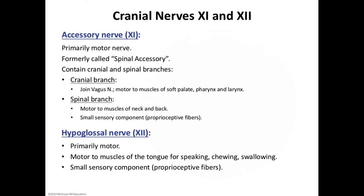Cranial nerve number eleven is the accessory nerve. These accessory nerves originate in the medulla oblongata and the spinal cord, so they have both cranial and spinal branches. Each cranial branch joins a vagus nerve and conducts impulses to the muscles of the soft palate, pharynx, and larynx. The spinal branch descends into the neck and supplies motor fibers to the trapezius and sternocleidomastoid muscles. This nerve is motor with some proprioceptive fibers.